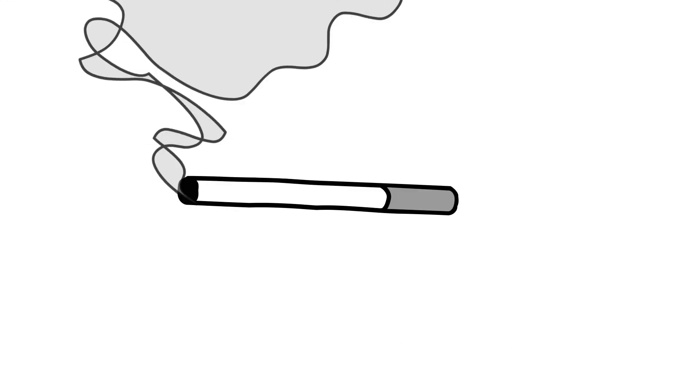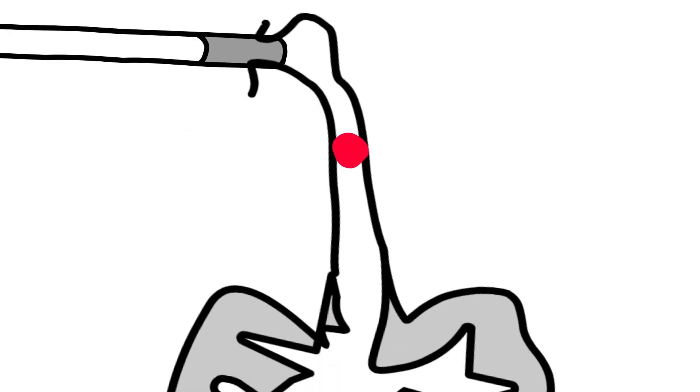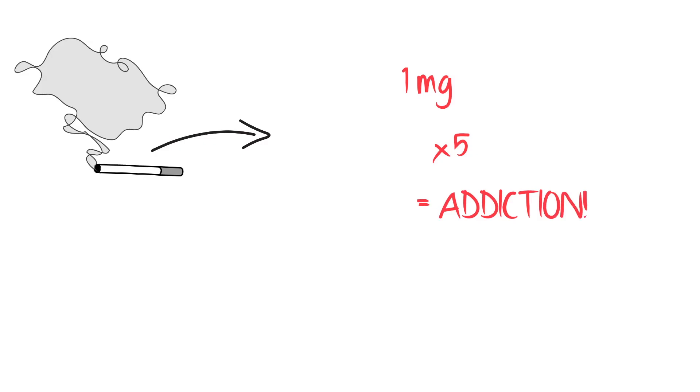When tobacco is burned, tar droplets are produced and inhaled into the lungs. Nicotine travels into the lungs on the tar droplets, enters the alveoli, and is absorbed across the respiratory epithelial cells to enter the pulmonary venous circulation, moving into the systemic arterial circulation. About 1 mg of nicotine is ultimately absorbed from 1 cigarette. It's estimated that 5 mg of nicotine per day can facilitate an addiction to tobacco products.